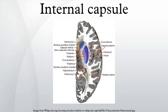The internal capsule is a white matter structure situated in the inferomedial part of each cerebral hemisphere of the brain. It carries information past the basal ganglia, separating the caudate nucleus and the thalamus from the putamen and the globus pallidus. The internal capsule contains both ascending and descending axons.